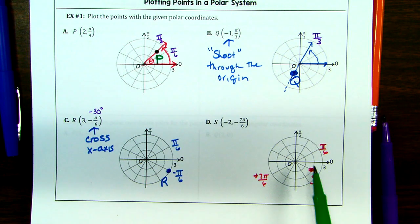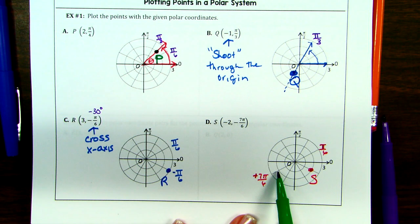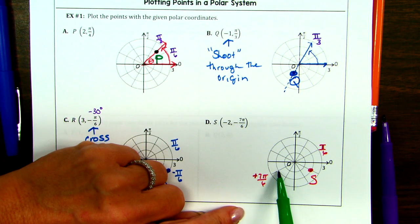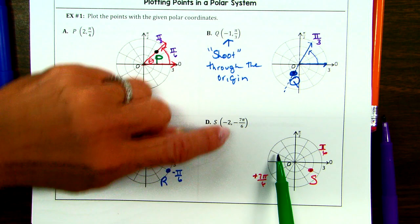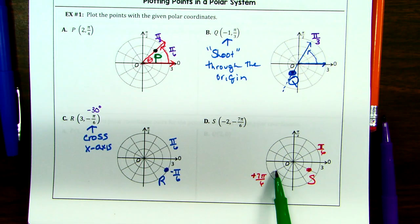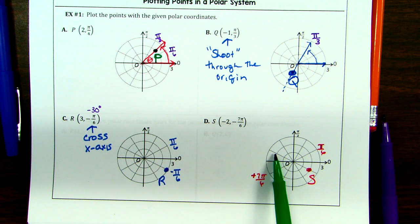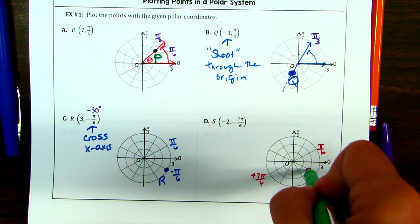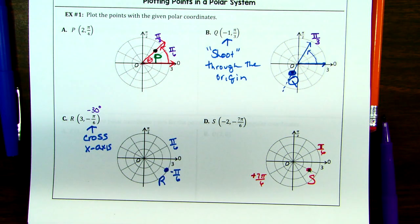Let me show you the other way. Start at the pole, go to where everybody's positive. Do I get to stay? No. Let's do the angle first: when my angle is negative, I cross the x-axis. Positive 2, positive 7 pi over 6 is right here — but positive 2, negative 7 pi over 6 would be right here. But I don't get to stay there because I have a negative radius, so I shoot through the origin and land here. It doesn't matter which one you do first. However many negatives you have is how many moves you make from your original hovering position.